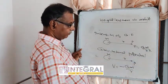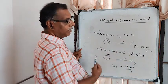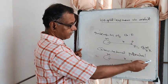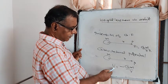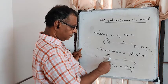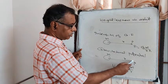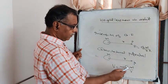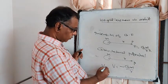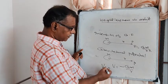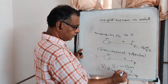Gravitational potential is the work done in bringing a unit mass from infinity to that point. It is given by V = −G·M / R, where M is the source mass and R is the distance. The maximum value of gravitational potential is zero, which occurs at infinity.